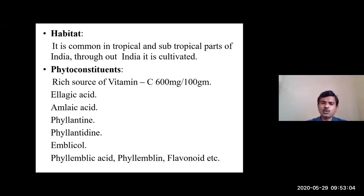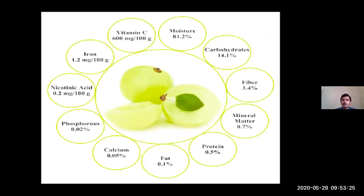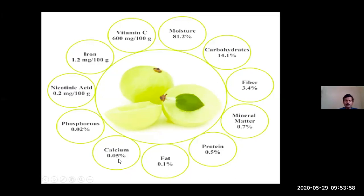Apart from vitamin C, other active principles include ellagic acid, emblilic acid, phyllanthin, phyllantidine, embilicol, phylloemblic acid, phyllembilin, and flavonoids. Regarding minerals: vitamin C is around 600 mg per 100 grams, iron is 1.2 mg per 100 grams, and nicotinic acid is around 0.2 mg.